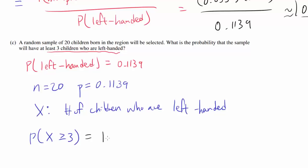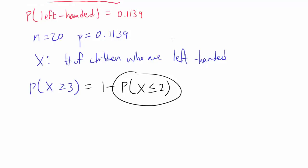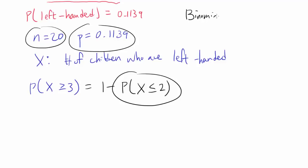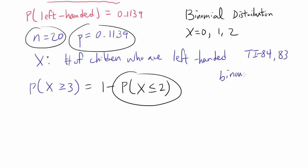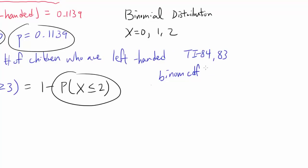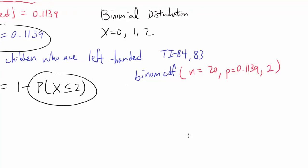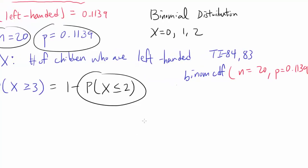To make the calculation easier, we want 1 minus P(X ≤ 2), given N = 20 and p = 0.1139. We use the binomial distribution, evaluating X equals 0, 1, and 2. A quick way to do this is with a TI-84 or TI-83 using binomial CDF, which calculates cumulatively from zero up to the number you plug in. With N = 20, p = 0.1139, evaluated up to 2, you get 0.5976.